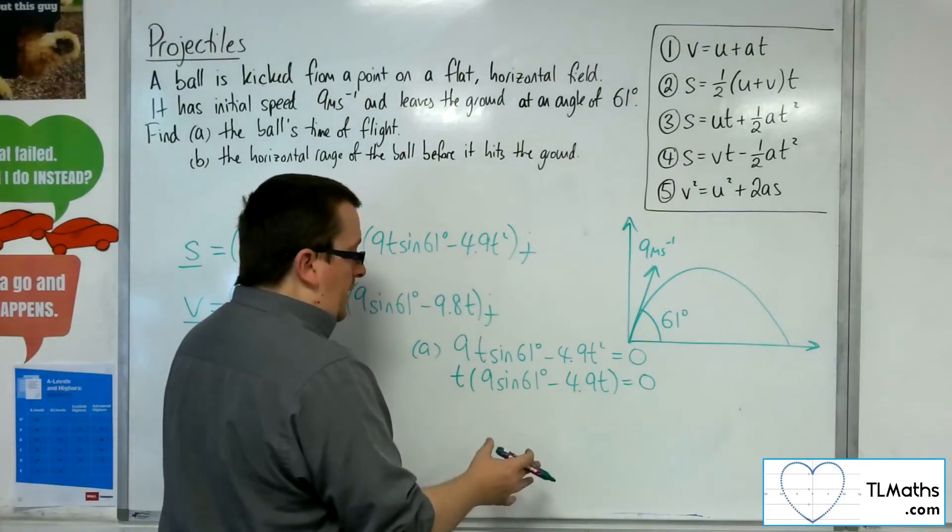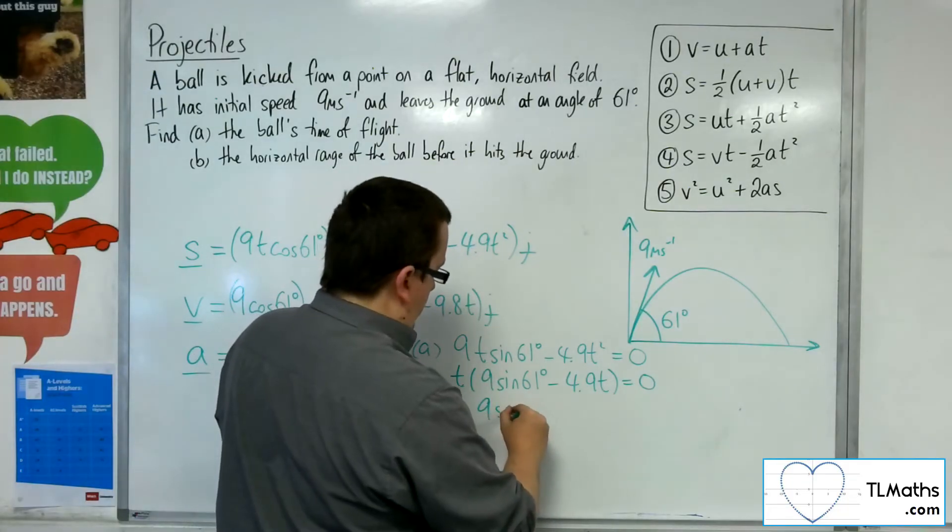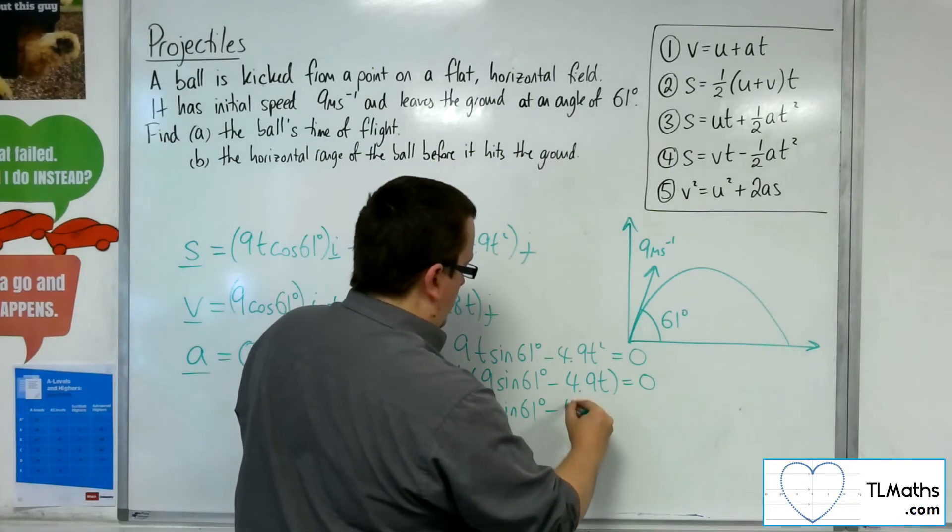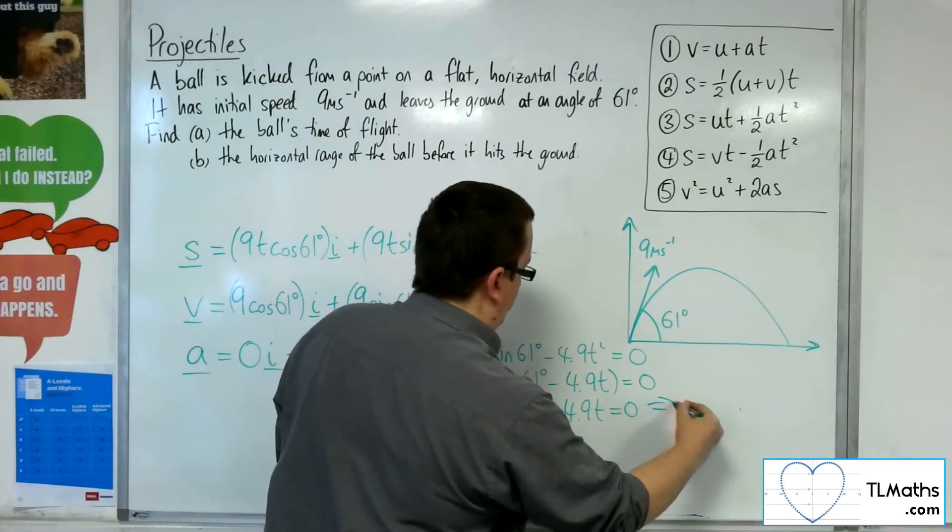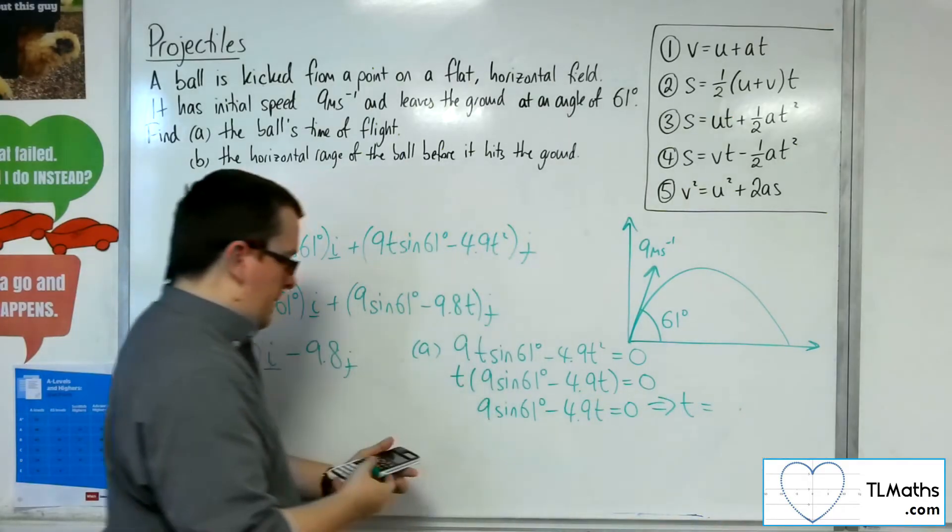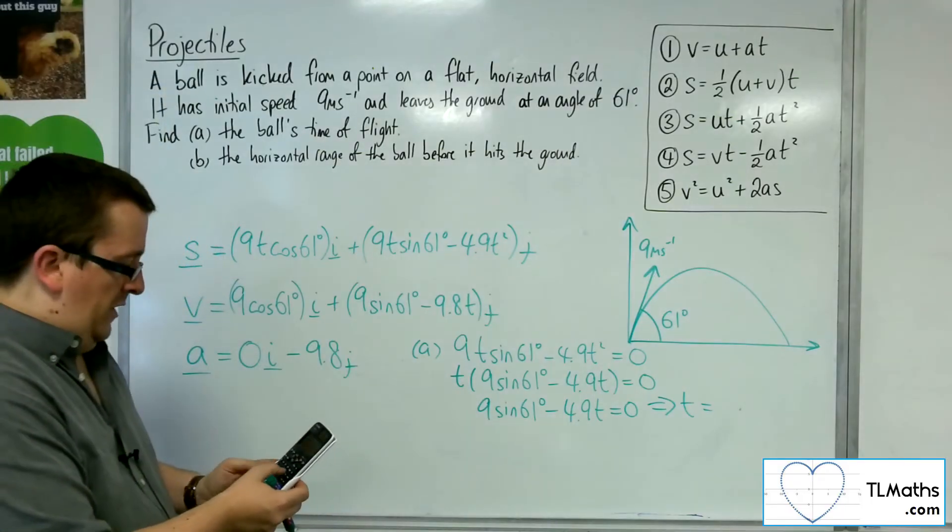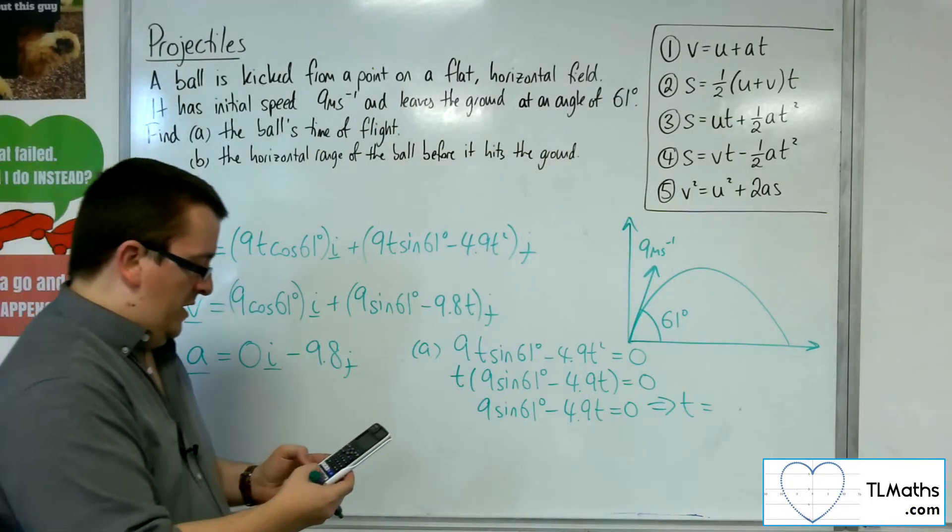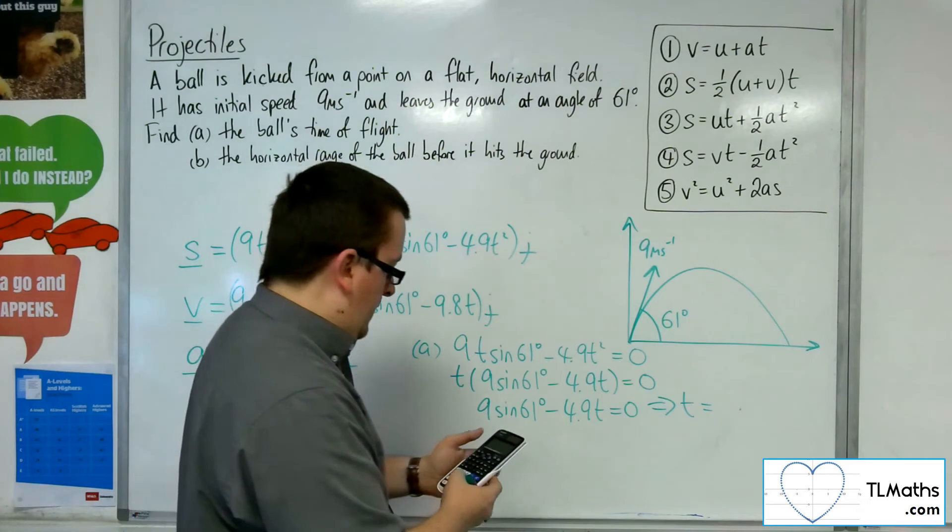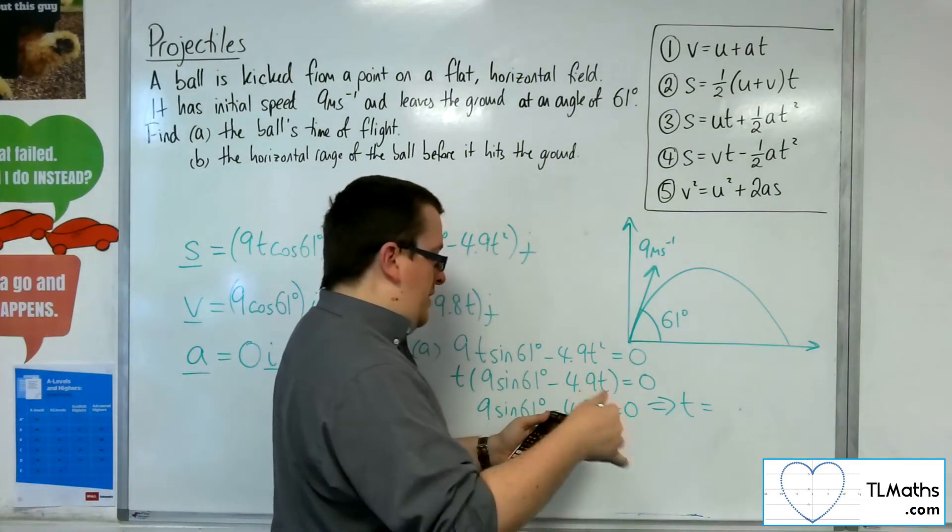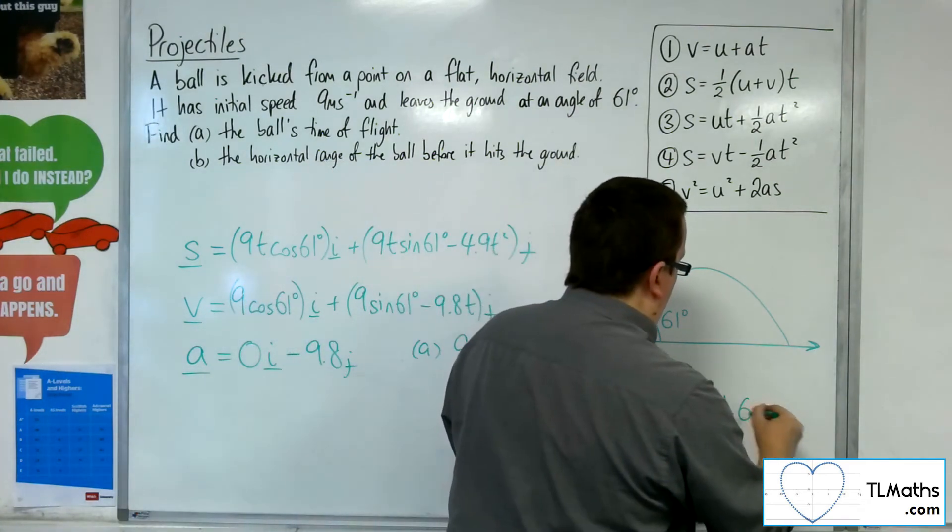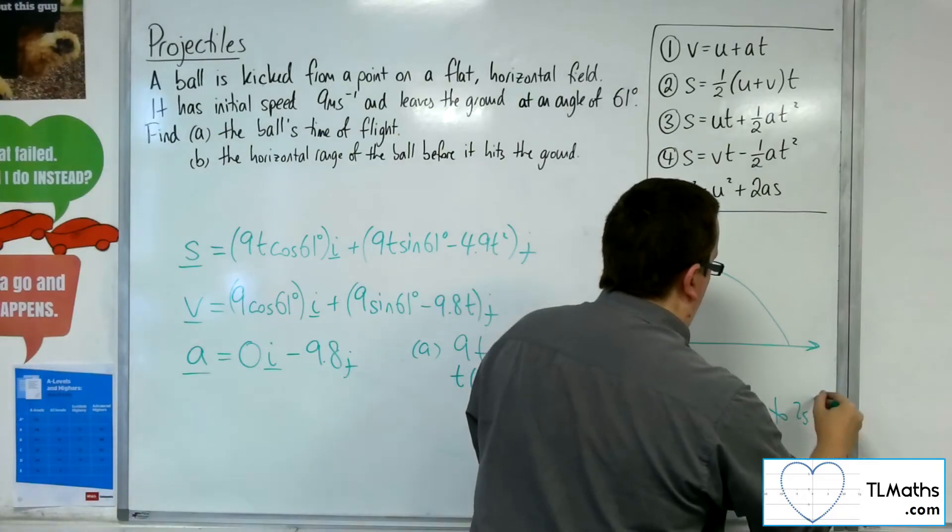I want to find when this bracket is 0. So 9 sine 61 take away 4.9t is 0. So 9 times sine of 61 divided by 4.9 gets me 1.606, so 1.6 seconds to two significant figures.